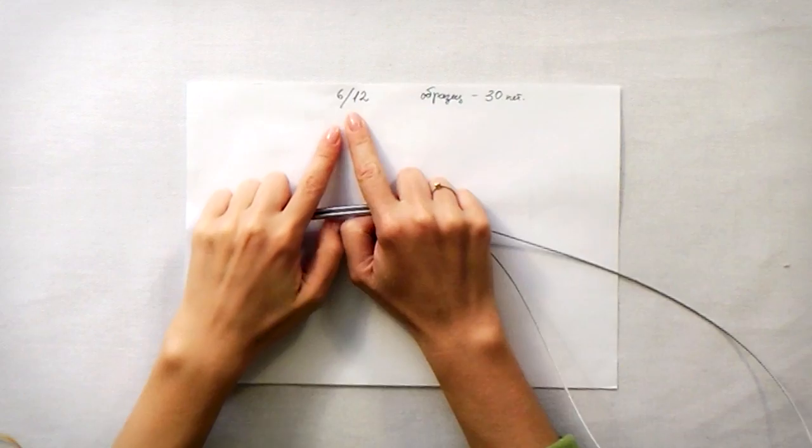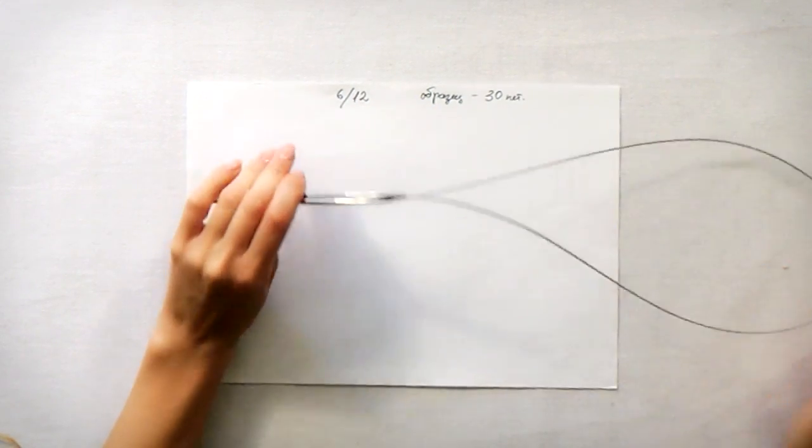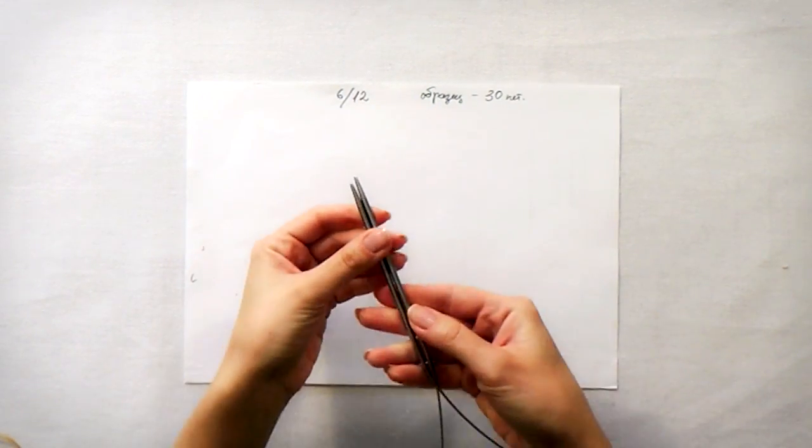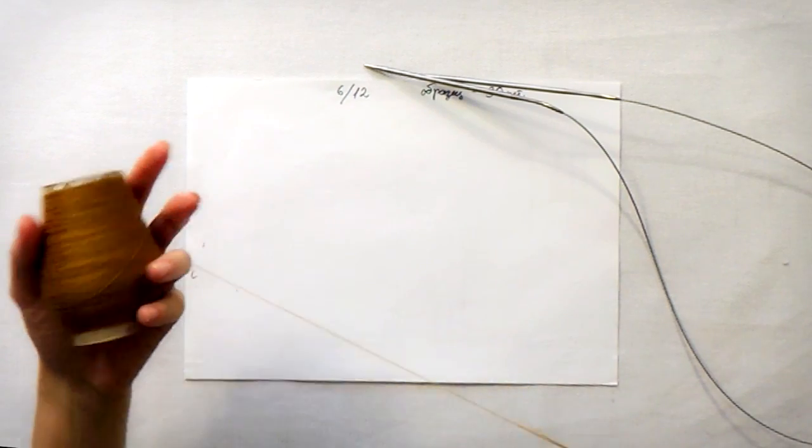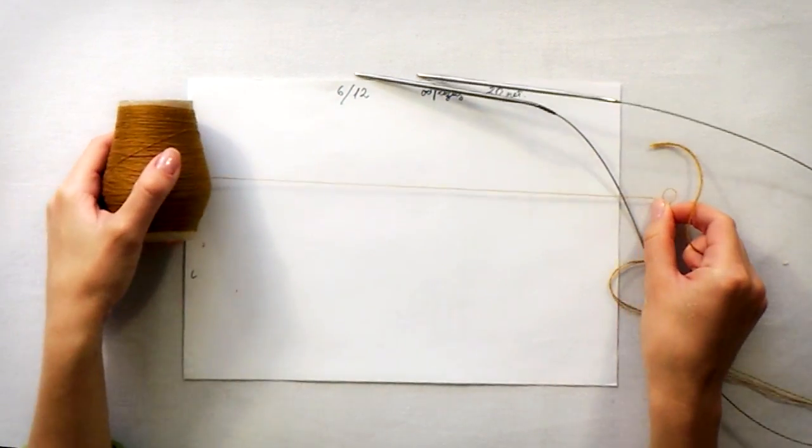As you can see I wrote here 6 per 12. That means that every segment of our wheat will be 6 stitches per 12 rows.